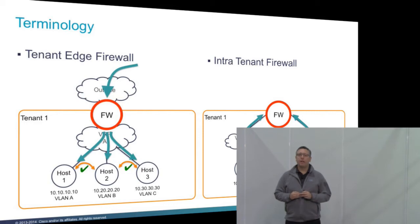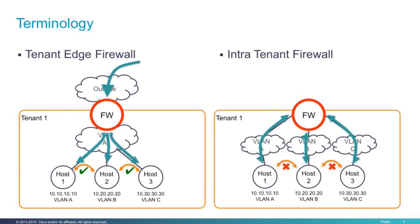One is what we call the tenant edge firewall — the north-south firewall — which is positioned at the border of the network, the border of a tenant or a VRF. The other piece is the intra-tenant firewall, which protects hosts in different VRFs from each other. Let's look at the design aspects of tenant firewalls, both intra and inter-tenant, in regards to how we're bringing them into a VXLAN eVPN fabric.